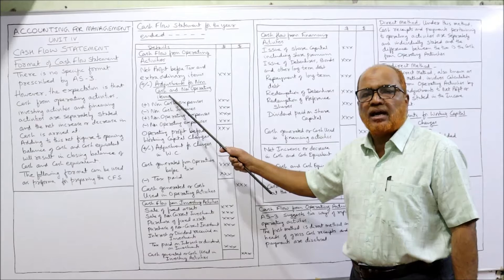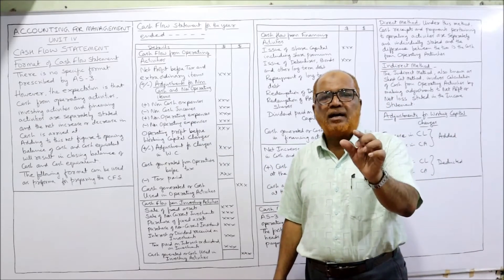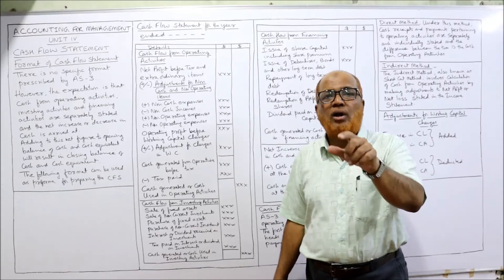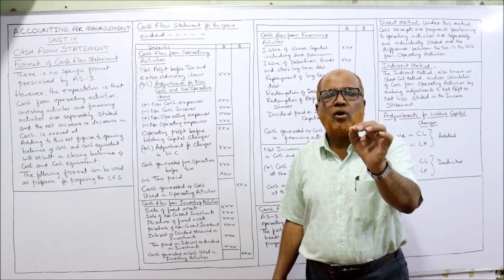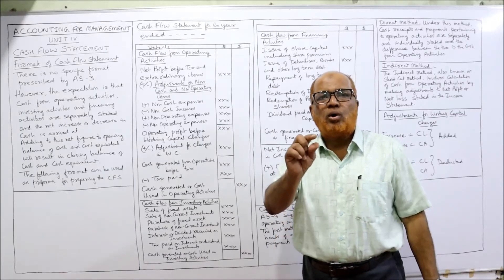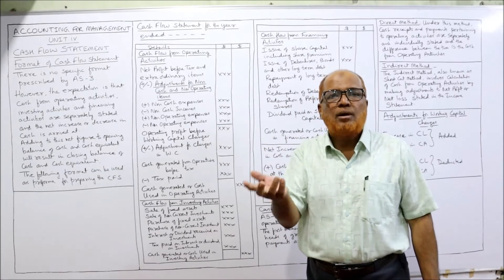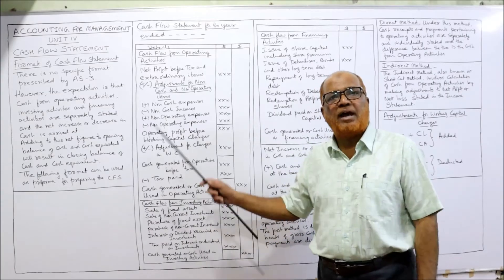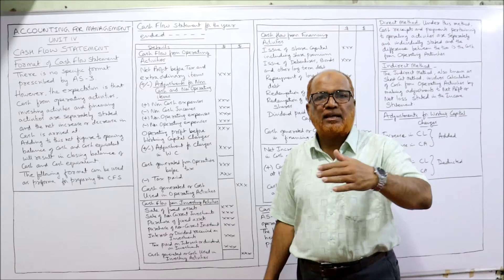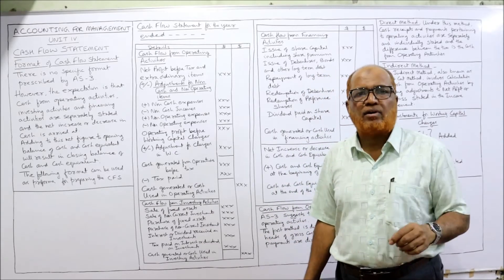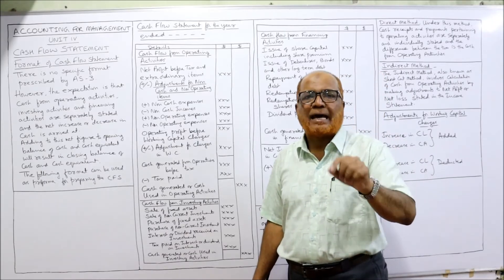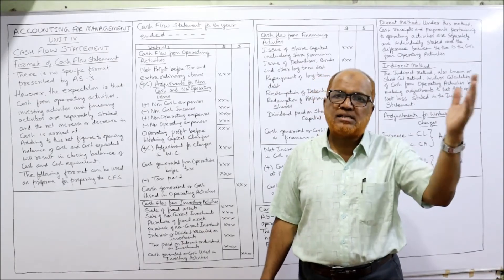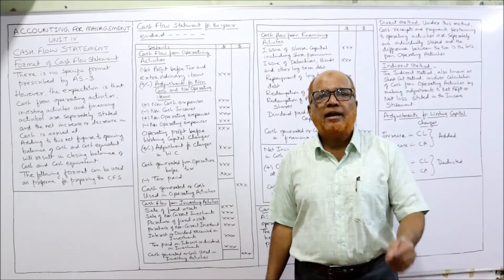Adjustments are made for non-cash and non-operating items — those items taken in the income statement that do not involve any cash. The best example of a non-cash item is depreciation. Depreciation is only a book entry; it does not involve any cash but is already charged in the profit and loss statement, so it is added back. Similarly, goodwill written off, other intangible assets written off, provision for irrecoverable debts, and provision for taxation are also non-cash items already adjusted in the income statement.